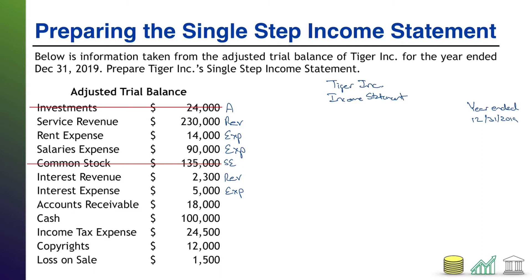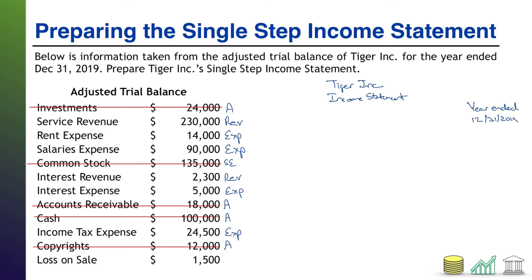Accounts receivable is an asset on our balance sheet, and so is cash — I'm going to strike both of those. Next up, income tax expense — the name gives it away. Then we've got copyrights, which are intangible assets, also on the balance sheet. And then we have loss on sale. The word loss is essentially a substitute for the word expense — it's a special type of expense. Whenever you see the word loss, know that it is an expense on the income statement. Likewise, if you see a gain, that is going to be a revenue. We've scratched out five pieces of information we don't need; the rest all falls into revenue or expense.